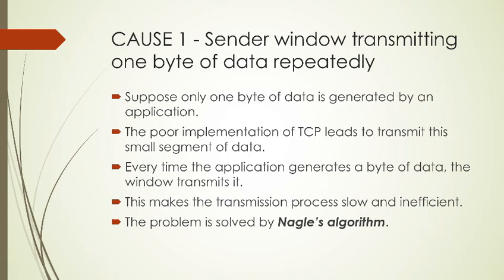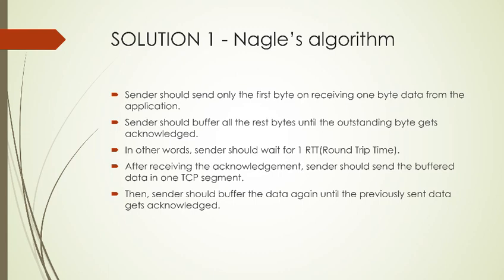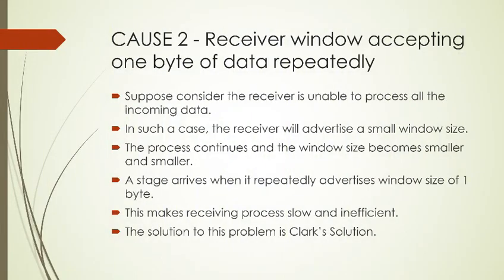This problem is solved by Nagle's Algorithm. The solution to Cause 1 states that the sender should send only the first byte upon receiving one byte of data from the application. After sending the first byte, it should buffer all remaining bytes until the sent byte is acknowledged. Once acknowledged, the sender sends all the buffered data. This process repeats: a single byte is sent, it waits for acknowledgement, and once acknowledged it sends all buffered data.